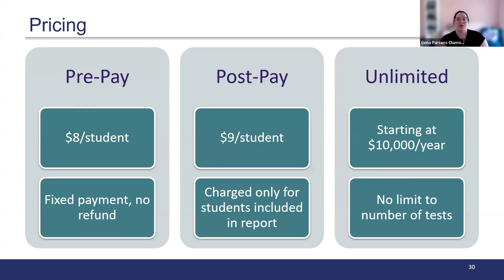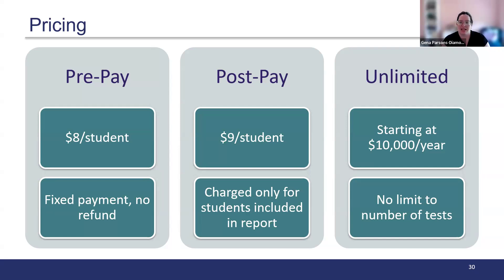In order to access your reports, you do need to pay. Pricing for the Threshold Achievement Test is per student per test. The first option is prepay at $8 per student. To prepay, you must specify the number of students you will test and generate an invoice prior to starting. Testing will stop automatically once you reach that number, and no refunds are given if you do not reach the number of students you specified.